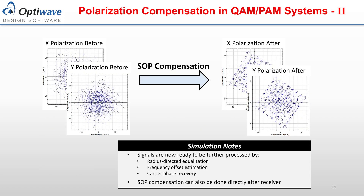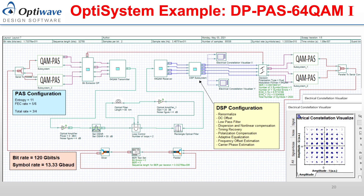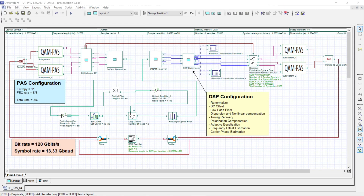Here is a small demonstration of the polarization compensation component used with a 64 QAM system in OptiSystem. Following demultiplexing in Stokes space, the individual symbols are discernible in both x and y polarizations. I will now demonstrate a dual polarized 64 QAM system with probabilistic amplitude shaping in OptiSystem. As with the previous example, the new components and subsystems used have been created with C++ components, but will be made into standard OptiSystem components in the future.